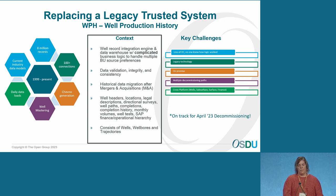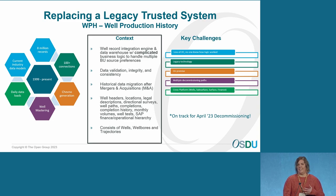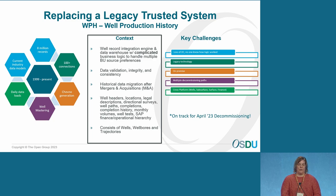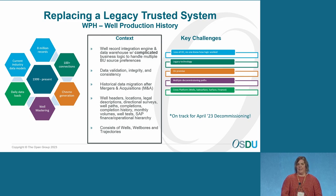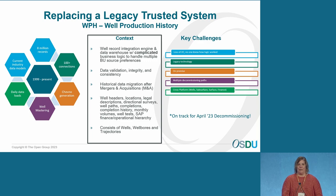At the last forum I talked about another use case around decommissioning a legacy system called our well production history system. It's a very complex system that's been in place at Chevron since the late 90s — our well header system of record encompassing all kinds of data types, legacy code, with limited organizational capability left that understands the solution. It was on-prem, and we're moving everything to the cloud. We've had multiple decommissioning attempts. OSDU will finally allow us to do this. We've had to push it slightly due to last-minute hurdles, but we will be decommissioning it hopefully in the May-June timeframe, and we are all very excited.